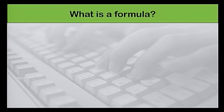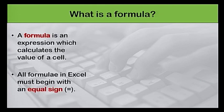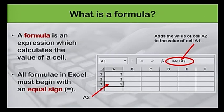Let's start with what a formula is. A formula is an expression which calculates the value of a cell. All formulae in Excel must begin with an equal sign. This is because the cell contains or is equal to the formula and the value it calculates. For example, cell A3 contains a formula which adds the value of cell A2 to the value of cell A1.